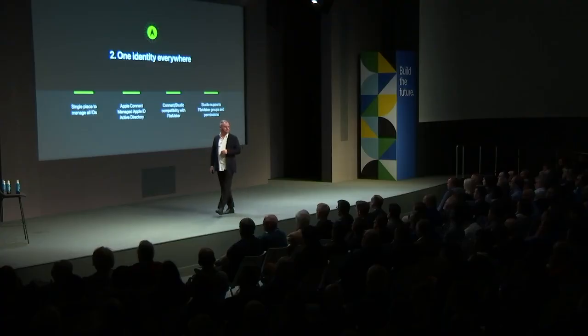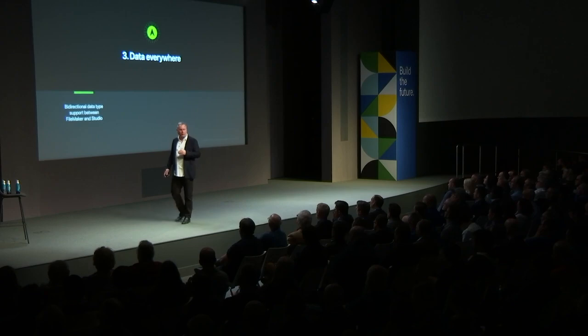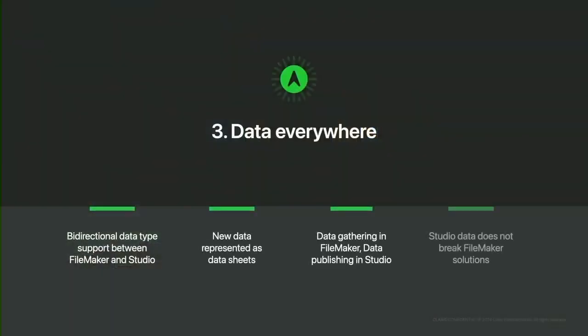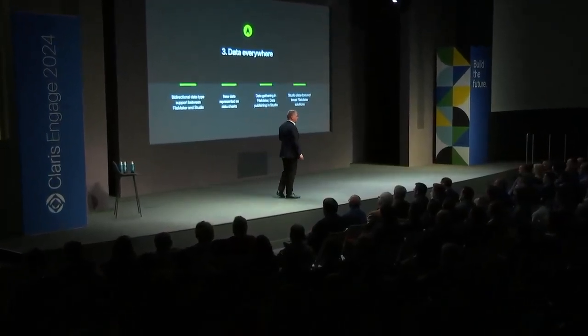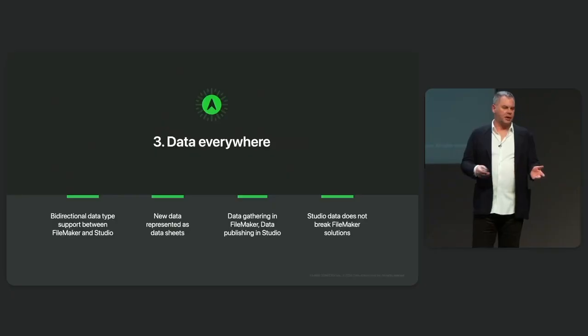Data accessibility throughout the platform is probably the most complex challenge that we face in Claris engineering. It's important to us that all FileMaker data types are representable in Studio in a bi-directional fashion and leverageable in Connect. It's important that in new parts of the platform, all data sources are represented in a spreadsheet-like fashion so that people don't have to think about or understand schema to build something valuable. Within Studio, initial data types have been chosen to support Studio functioning as a publishing engine and as a data gathering tool for FileMaker. And any new Studio data types that we stand up don't break anything in FileMaker when synchronizing back and forth between the two.